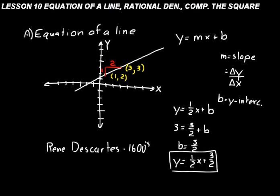For an equation of a line, put the standard form y equals mx plus b in your formula book. Know what slope is — the change in y over the change in x — which you can find by drawing a triangle on your graph. If given two points, slope equals y2 minus y1 over x2 minus x1. For our two points, 3 minus 2 over 3 minus 1 gives one-half — the same slope.